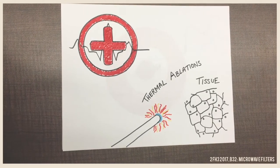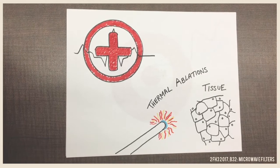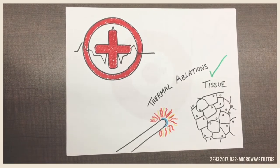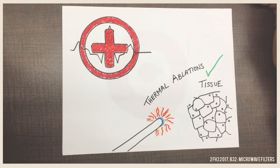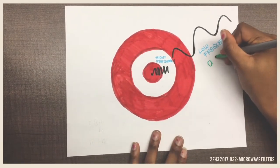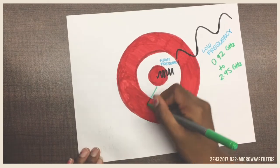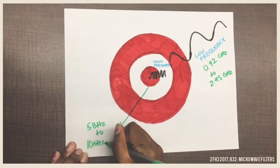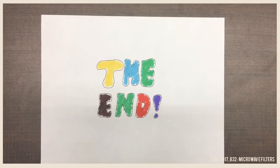A large variety of medical equipment and procedures utilize microwaves. One specific procedure is the thermal ablation of tissue, in which microwaves create localized dielectric heating for controlled destruction of tissue. Due to the short wavelength nature of microwaves, very precise ablations suitable for specific diseases can be accomplished. For example, frequencies of 0.92 GHz and 2.45 GHz can be used for large volume ablations, while higher frequencies of 5.8 GHz to 10 GHz are used for very precise ablations — all requiring the use of microwave filters. Thank you for tuning in to our Crash Course on Microwave Filters.